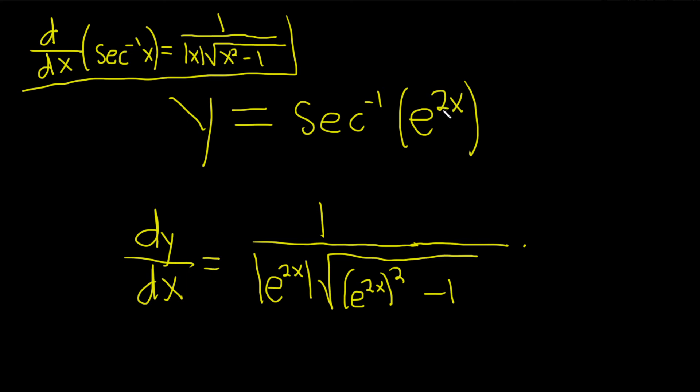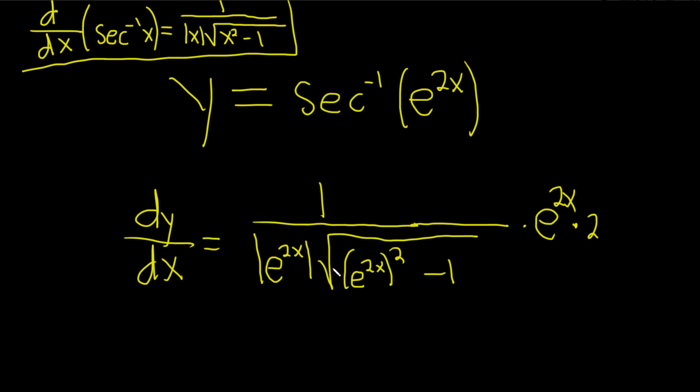Well, the derivative of e to the 2x is e to the 2x times the derivative of the inside, so 2. It's another chain rule. Remember, the derivative of e to the x is e to the x. So when you take the derivative of e to the 2x, it's just e to the 2x, and then times, again, derivative of the inside. So it's like a double chain rule problem.